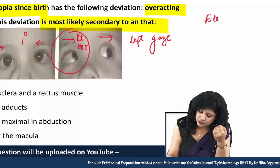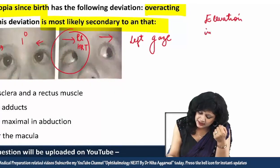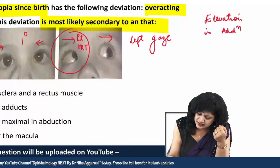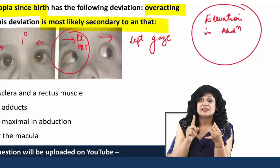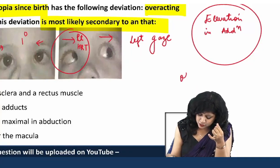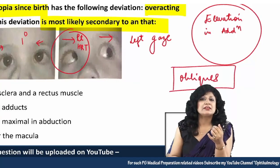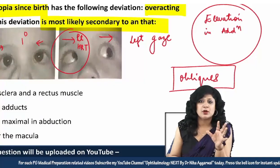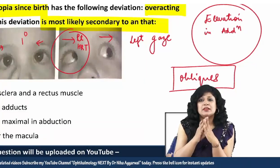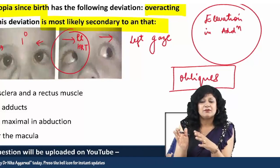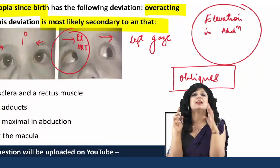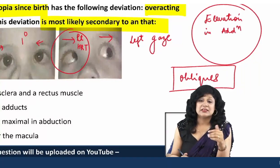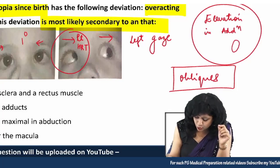The common finding is elevation in adduction in both eyes. You need to find the muscle responsible for elevation in the adducted position. Maximum elevation and depression in the adducted eye is the function of the obliques. In the abducted eye, it is the recti muscles. Since we are dealing with the adducted eye, we are looking at the obliques.